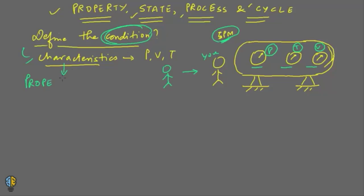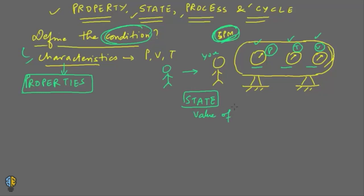These characteristics which define the condition of a system are called properties, and a single characteristic is called the property of a system. Now, the value of these properties at that instant of time — 5 PM — is called the state of a system. So the state of the system is the definite value of properties at an instant of time.